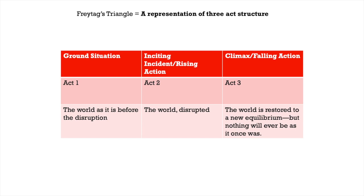As I mentioned at the beginning, Freytag's triangle is a way to represent three-act structure. Think of ground situation as act one — it portrays the world as it is before the disruption that will set the story in motion. The inciting incident is the disruption that initiates act two, which portrays the world disturbed or disrupted. Rising action is what happens when characters struggle with this disruption. The climax moves us into act three, in which the world is restored to a new equilibrium — although nothing will ever be as it once was. The world of act three is not the same as the world of act one; the disruption and the resulting struggle have changed the world and its characters.